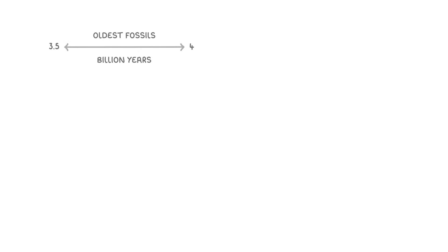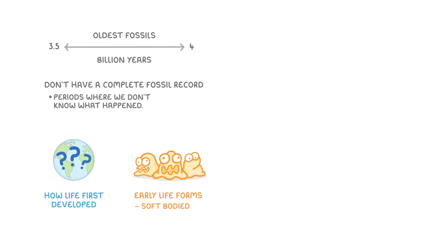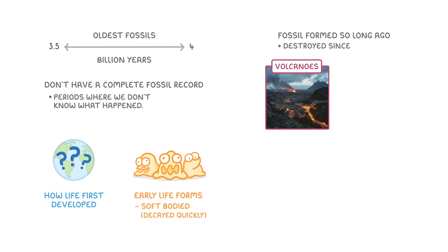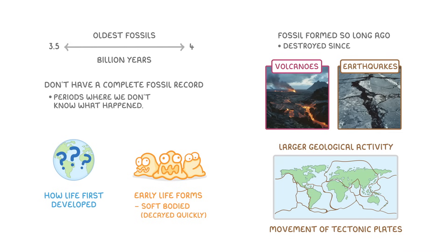The oldest fossils we've found so far are between three and a half to four billion years old, but we don't have a complete fossil record — there are currently big periods where we don't really know what happened, and importantly we still don't know how life first developed on Earth. One reason is that many early life forms were soft-bodied, so they would have decayed really quickly, making fossil remains unlikely. Another reason is that fossils formed so long ago may have been destroyed since, for example by volcanoes, earthquakes, or geological activity like the movement of tectonic plates.